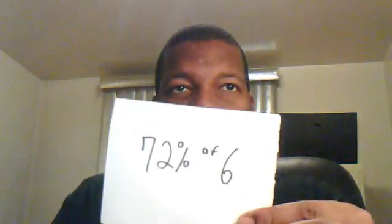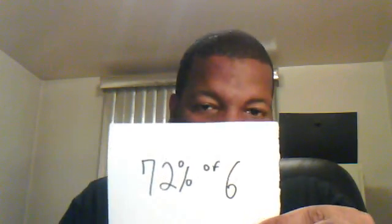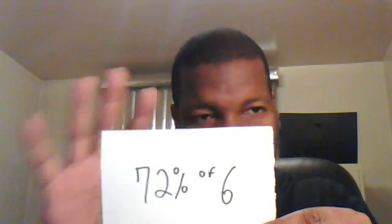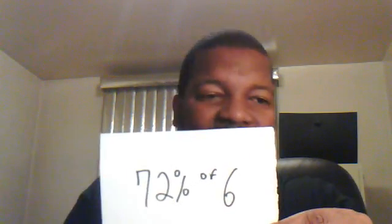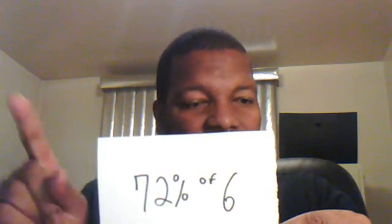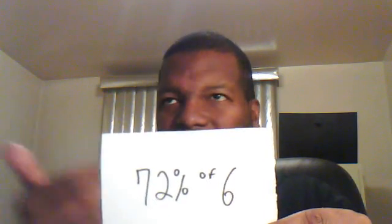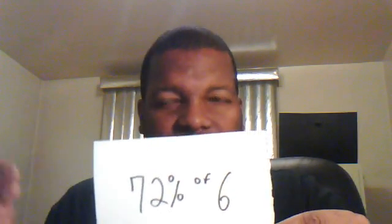Now let's look at a two-digit by one-digit question: 72% of 6. You're treating 6 as 100% and taking 72% of it. First, 7 times 6 is 42. Then 2 times 6 is 12, so there's a carry — the 42 becomes 43.2. Now make it logically sensible: it can't be 432, can't be 43.2 in that position — it has to be 4.32. That's the only thing that makes sense.